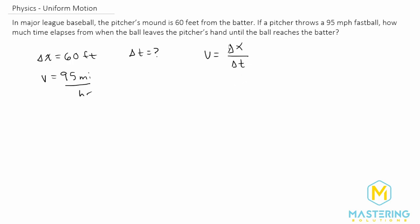But we want to solve for the time. So we'll multiply both sides by delta t. So that gives us now delta x is equal to v times delta t.